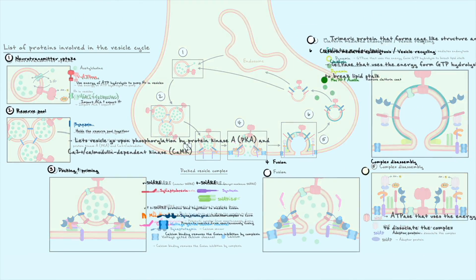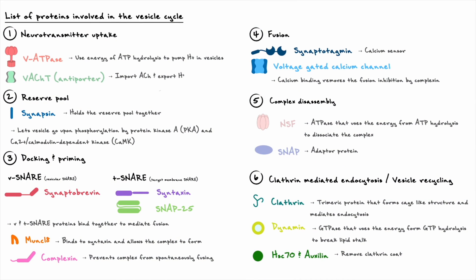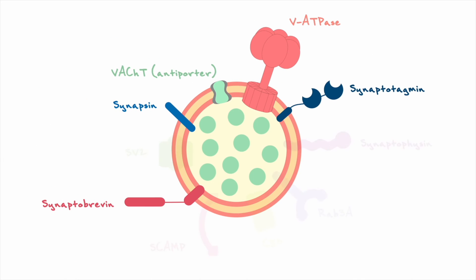In summary, a lot of proteins are involved at each step of the vesicle cycle and they each have their role to play to make the vesicle cycle an efficient process. Any deficiency in any of these proteins will result in hindered chemical transmission. Obviously, this is not an extensive list and many more proteins contribute to the efficiency of this process. For example, if we consider the proteins on the vesicle, we've only scratched the surface of all the proteins that are there and contribute to the cycle.